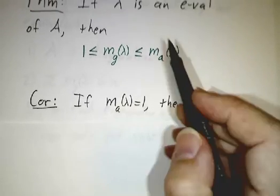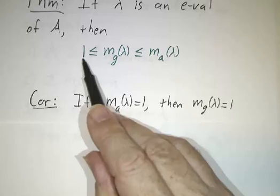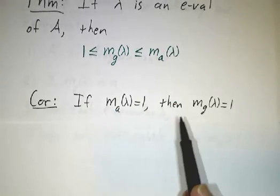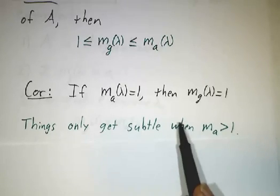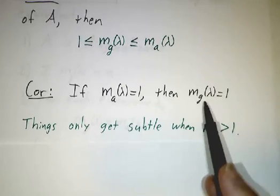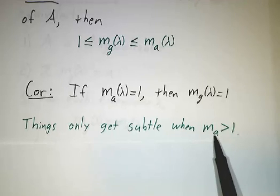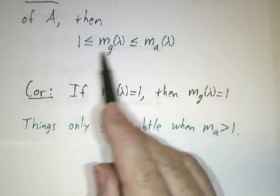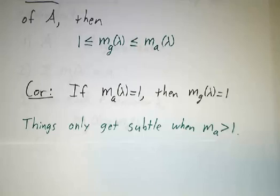Now, in particular, that means if the algebraic multiplicity is 1, then the geometric multiplicity is at least 1 and at most 1, so it's just 1. There's nothing to check when the algebraic multiplicity is 1. The only time things get interesting is when the algebraic multiplicity is bigger than 1. Then you have to figure out the geometric multiplicity and figure out is it 1, 2, 3, or some number up to the algebraic.